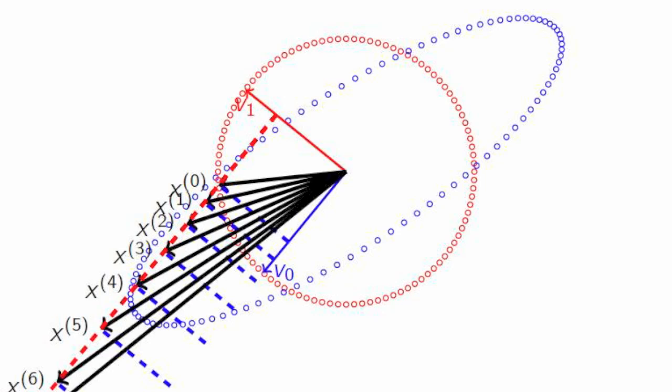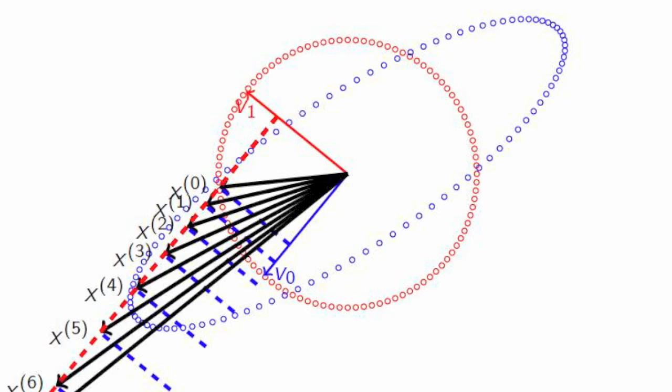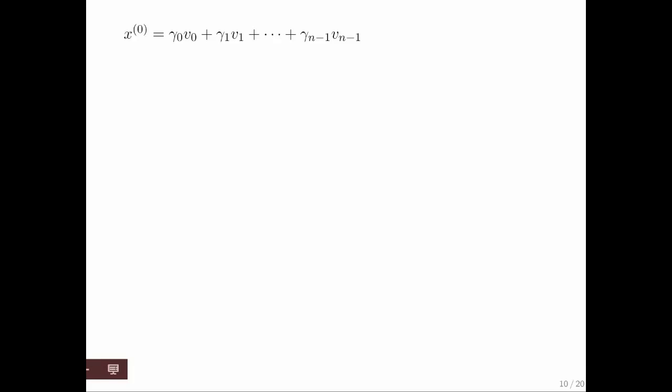If you keep doing that, eventually two things happen. Relatively speaking, the vector lies in the direction of v0, because the component in the direction of v1 becomes insignificant. Second, this vector would eventually become infinitely long — and that is obviously a bad thing. If the largest eigenvalue in magnitude is greater than 1, the vectors keep getting longer and longer. If it's less than 1, the vector keeps shrinking to essentially zero. So we need to keep the length of the vector under control.